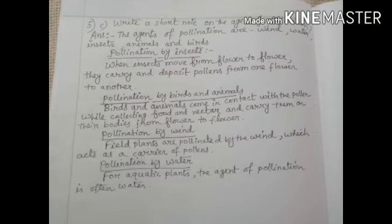Pollination by birds and animals: Birds and animals come in contact with the pollen while collecting food and nectar and carry them on their bodies from flower to flower. Pollination by wind: Field plants are pollinated by the wind which acts as a carrier of pollens.